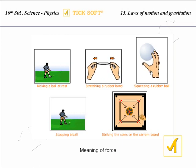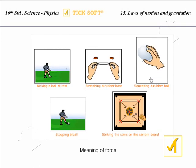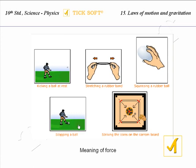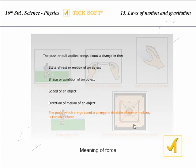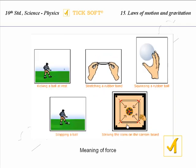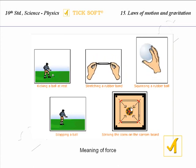The third picture explains squeezing a rubber ball. When we squeeze the rubber ball, the shape of the rubber ball changes. The fourth picture explains stopping a ball — the ball flew towards the football player and he stops it, changing its motion. The fifth picture explains striking coins on the carom board. When we strike the coins, the carom board coins split away.